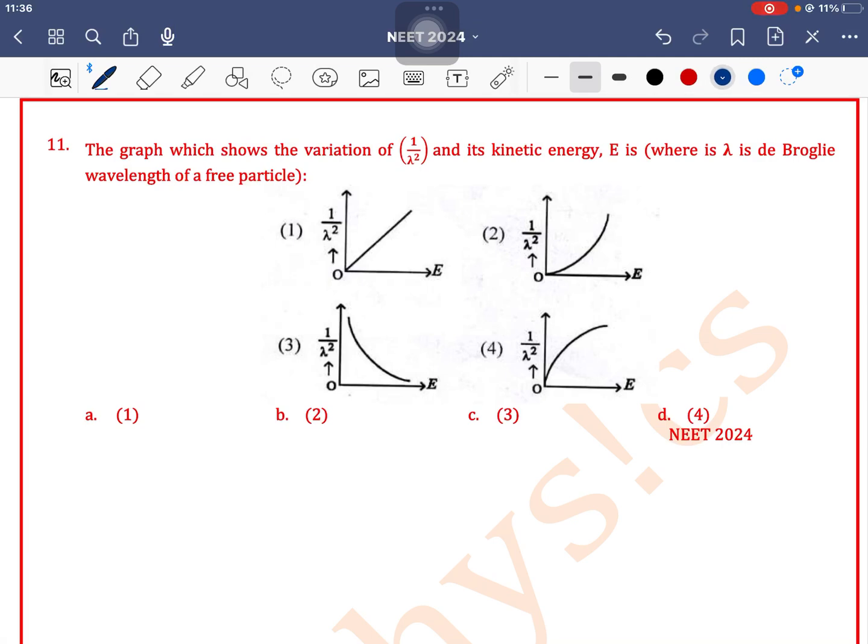The graph which shows the variation of 1 by lambda square and its kinetic energy E, where lambda is de Broglie wavelength of a free particle.